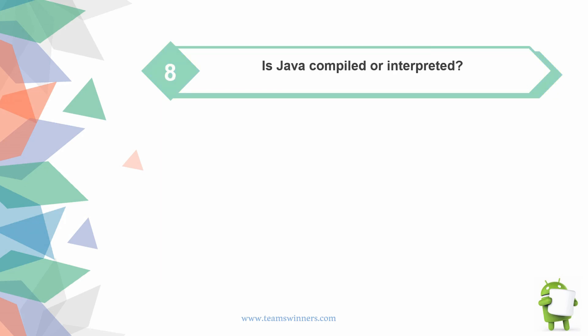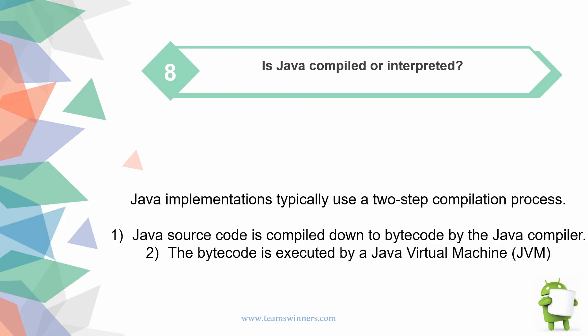Is Java compiled or interpreted? Java implementations typically use a two-step compilation process. First, Java source code is compiled down to bytecode by the Java compiler, and after this, the bytecode is executed by a Java Virtual Machine (JVM).